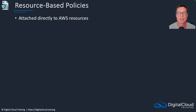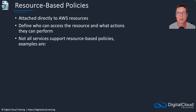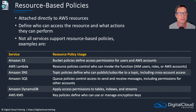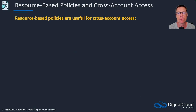Resource-based policies are attached directly to AWS resources and define who can access the resource and what actions they can perform. Not all services support resource-based policies. Examples that do include: Amazon S3, where it's called a bucket policy; AWS Lambda, for allowing invocation of a function — for example, when you connect an API to a Lambda function, it automatically creates a resource-based policy; SNS with topic policies; SQS with queue policies; DynamoDB, which allows granular access permissions on tables, indexes, and streams; and KMS with key policies.